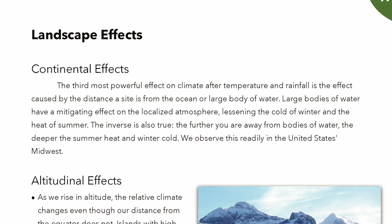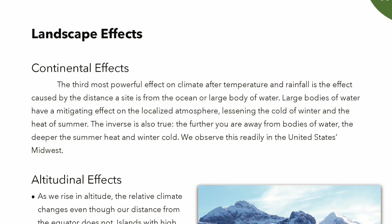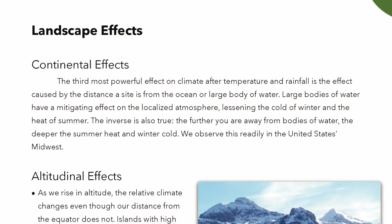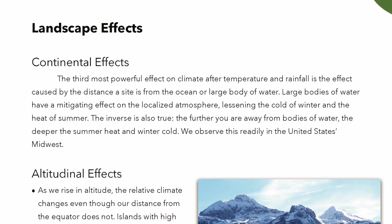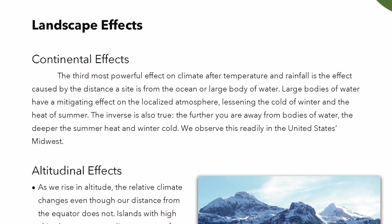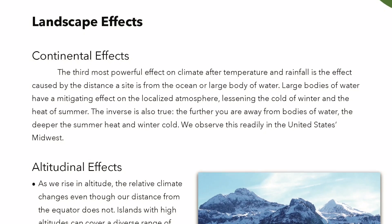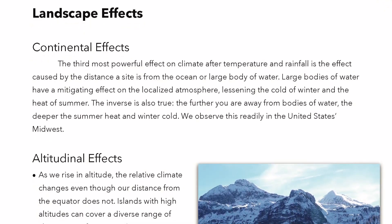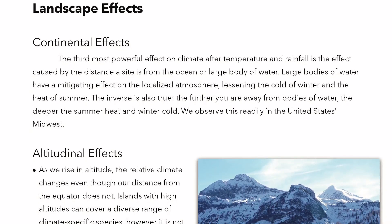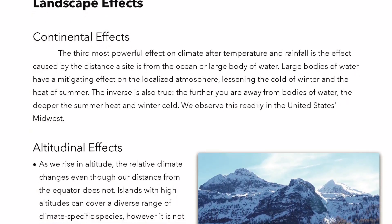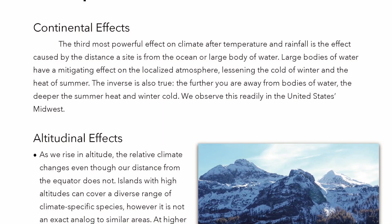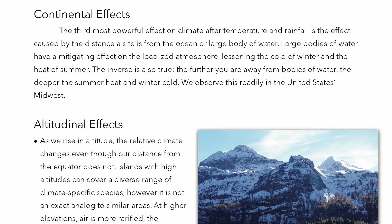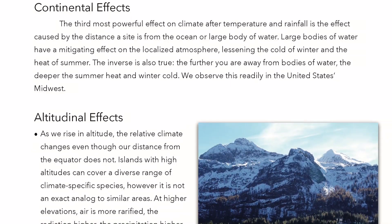Landscape effects. Continental effects: the third most powerful effect on climate after temperature and rainfall is the effect caused by the distance from the ocean or large body of water. Large bodies of water have a mitigating effect on localized atmosphere, lessening the cold of winter and the heat of summer. The inverse is also true — the further you are from bodies of water, the deeper the summer heat and winter cold. We observe this readily in the United States Midwest.